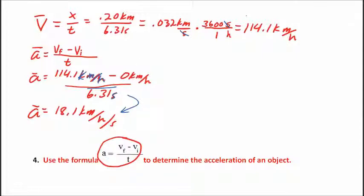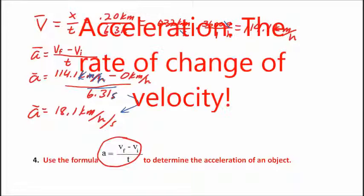What does this actually mean? Well what it means is that during the race the velocity of the dragster increased on average 18.1 kilometers per hour every second during the race. Let me say that again: the velocity increased on average 18.1 kilometers per hour every second during the race. That's what this acceleration means. It is the rate of change of velocity.